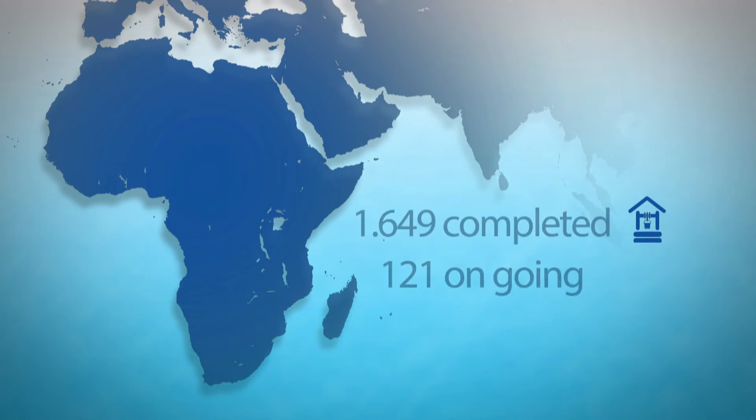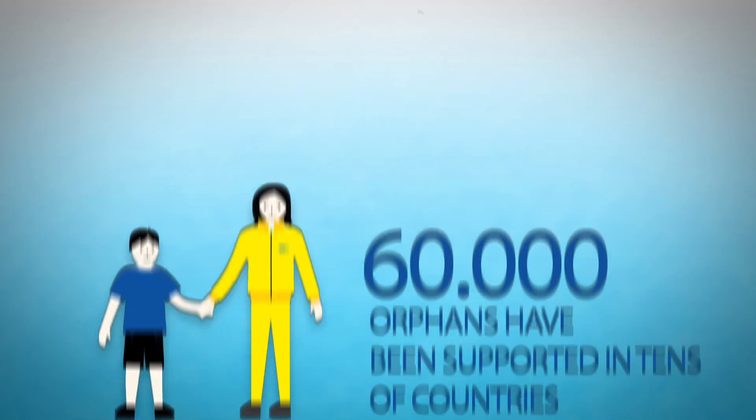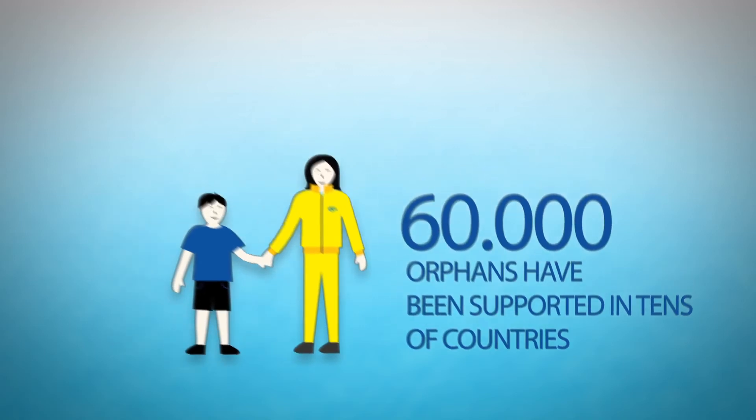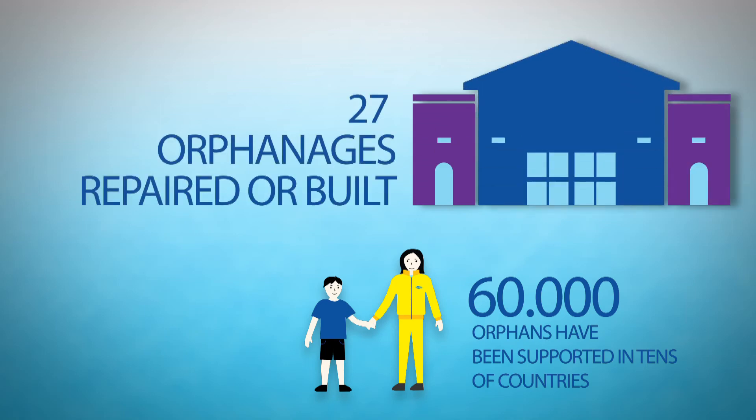Kimse Yokuma completed construction of 1,649 water wells, and 121 more are under construction. Within the framework of its ongoing help for orphans in more than 50 countries, Kimse Yokuma has sponsored more than 60,000 orphans and repaired or built 27 orphanages.